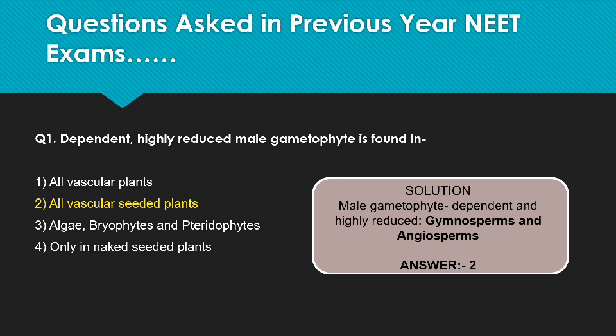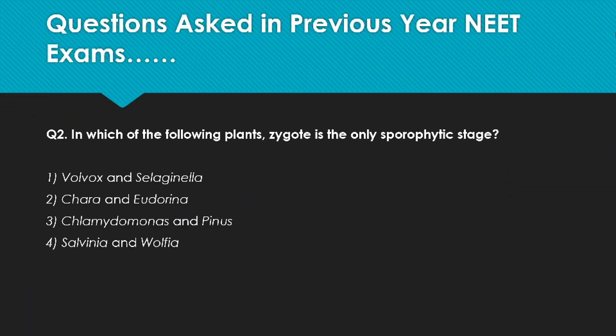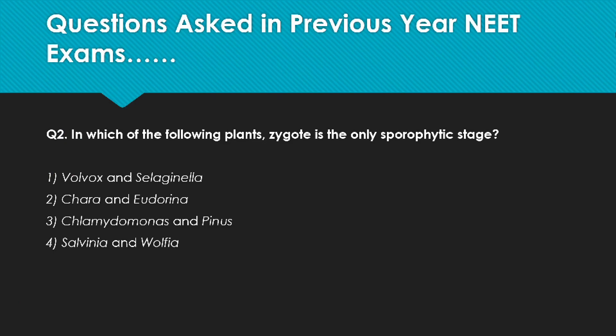Now let's move on to the next question: in which of the following plants is the zygote the only sporophytic stage? We must remember what we have learned about this. In organisms with a haplontic life cycle, the sporophyte is represented by a single-celled zygote. Such type of life cycle is seen in most algae like Volvox, Spirogyra, and Chlamydomonas. This will guide us to the answer.